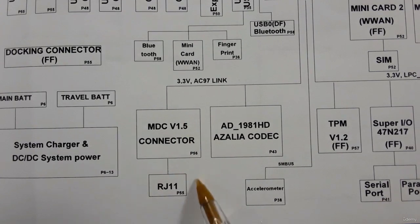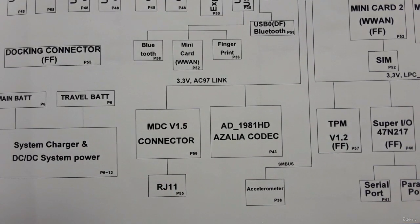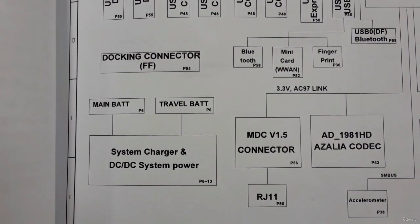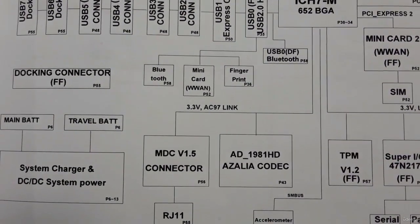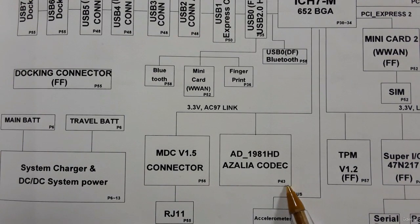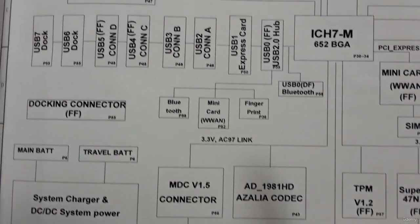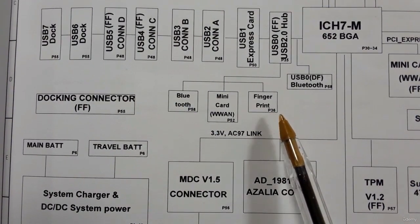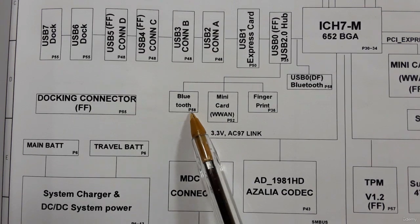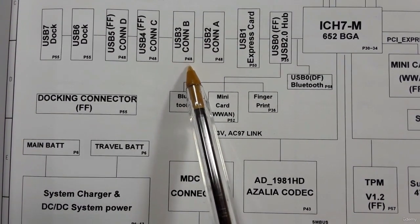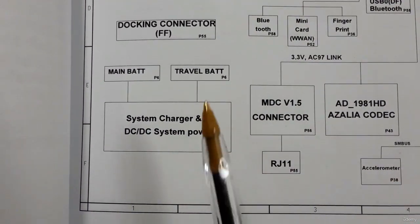We also have the MTC connector with a voltage of 1.5V connected to RJ11 for the phone. Each component has a corresponding page in the schematic — for example, the Azalea codec is on page 43, the fingerprint schematic on page 26, and the Bluetooth schematic on page 58.